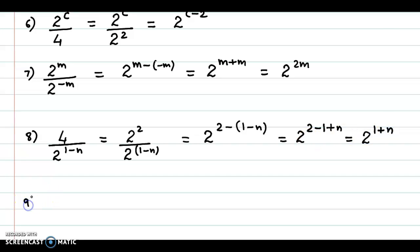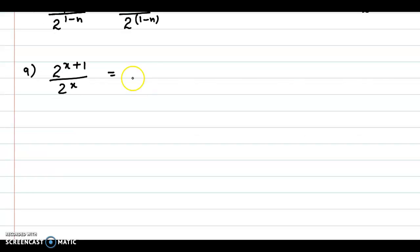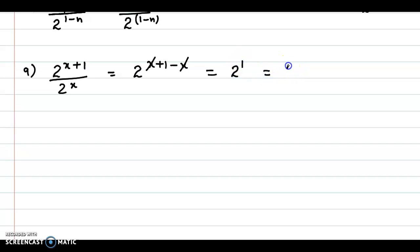Let's take one more example: 2 raised to x plus 1 upon 2 raised to x. Using the law of exponents, this is 2 raised to x plus 1 minus x. The x cancels with minus x, so we have 2 raised to 1, which is simply equal to 2.